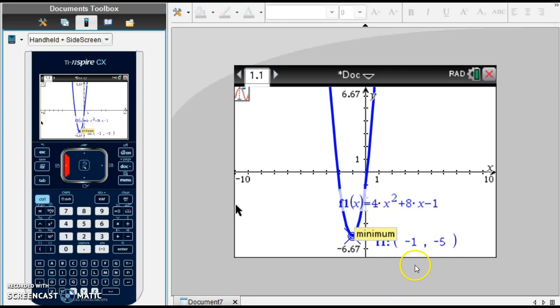It falls at negative 1, negative 5. So the vertex of this parabola is at the point negative 1, negative 5.